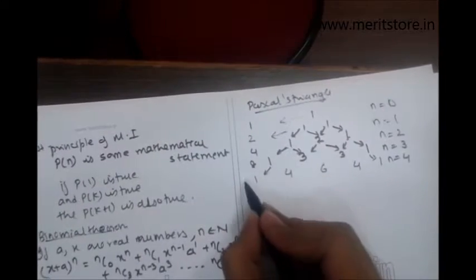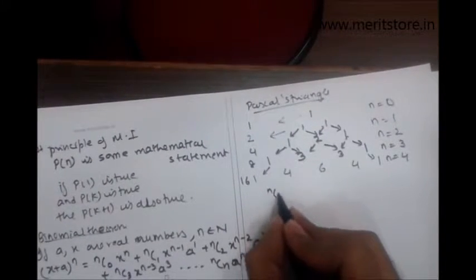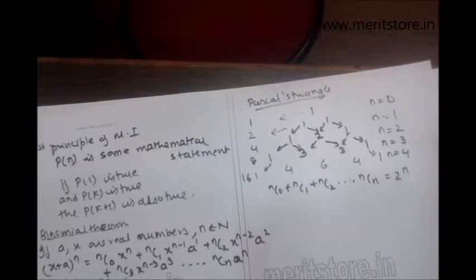The next one will be 8, this will be 16. I can generalize this relationship saying that nc0 plus nc1 plus nc2, going on till ncn, the sum will be 2 raised to n.